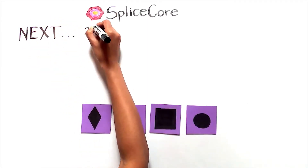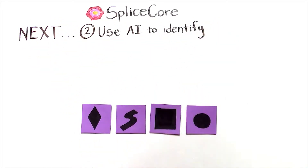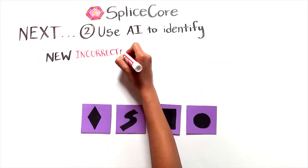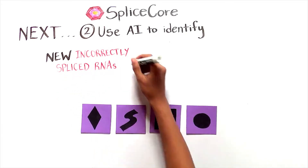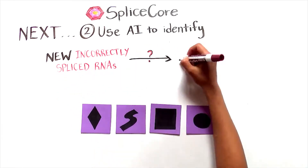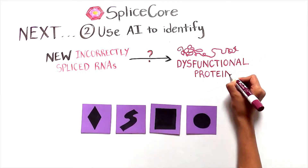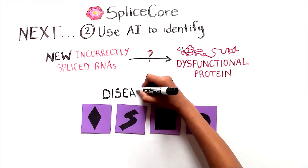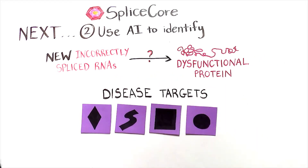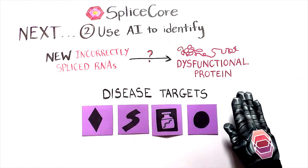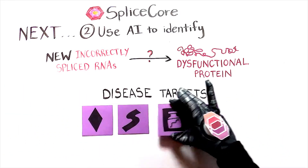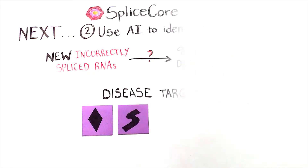In the next step, Invisigenics' artificial intelligence is able to identify which of the incorrectly spliced RNAs may be potential therapeutic targets, by finding the ones likely associated with dysfunctional proteins. Using this unique approach, Invisigenics AI is able to select the most promising druggable target, even if the RNA molecule had not previously been identified as a therapeutic candidate.